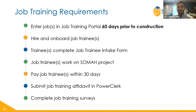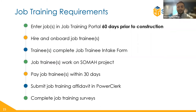To confirm fulfillment of job training requirements, contractors must submit a job training affidavit in PowerClerk during the incentive package milestone. Contractors are also required to respond to surveys on job training performance and retention for up to one year after the SOMA project is completed. A survey is sent immediately after submitting the job training affidavit, and follow-up surveys are sent at three, six, and nine months if the contractor reports hiring the job trainee on permanent staff. Examples of these surveys can be found in the appendix of the SOMA program handbook.